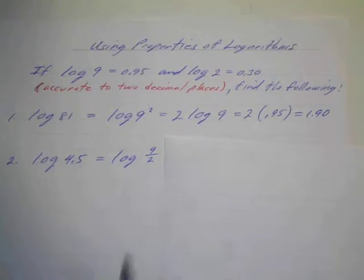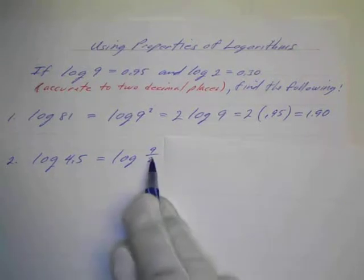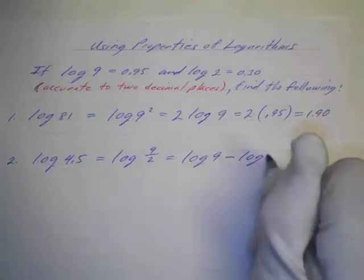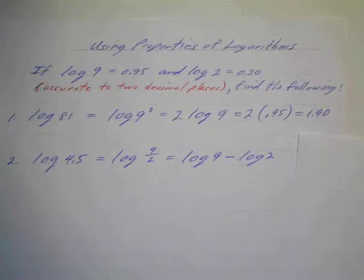Now the thing about that is that we can use our quotient rule and that's the same thing as log of 9 minus log of 2. And what is the log of 9? Well the log of 9 is 0.95 and the log of 2 is 0.3.